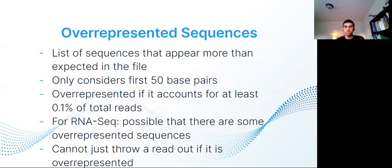The last thing to look into is overrepresented sequences, which is a list of sequences that appears more than expected in the file. The first 50 base pairs of each sequence are compared to a list of common first 50 base pair sequences to try and identify it. In RNA sequencing, it is possible that there are some overrepresented sequences. MicroRNAs, for instance, would be abundantly overrepresented because they average 22 nucleotides, so you can't just throw out a read if it's true.